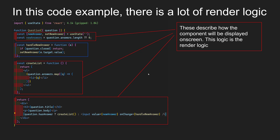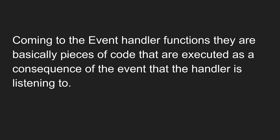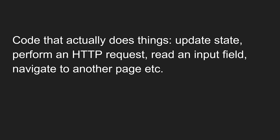The blue color box here is called an event handler function. Why? Because the handleChange method will not be called instantaneously — only when we click or change the input data will the function be called. Event handler functions are basically pieces of code that are executed as a consequence of the event that the handler is listening to. They do things like update state, perform an HTTP request, read an input field, navigate to another page, etc.